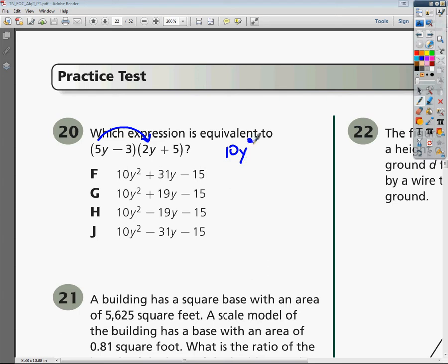Next, we're going to multiply negative 3 times 2y. Negative 3 times 2y is negative 6y.